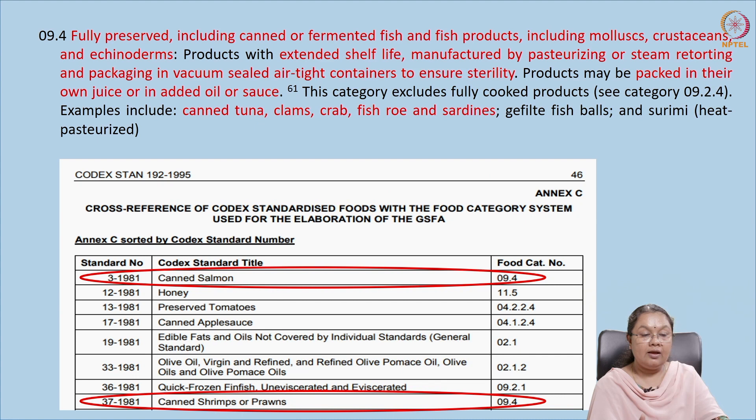When adding an additive to a canned seafood product, we have to refer to the relevant Codex tables — Annex C Table 1, Table 2, and Table 3 — as well as the table on general instructions on flavorants (CXG 66-2008). All these tables need to be referred to before adding additives. Under category 9.4 we have canned shrimps or prawns, canned tuna and bonito, canned crab meat, canned sardine and sardine-like products, and canned fish. Many products have not yet been listed under this category.